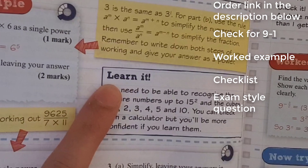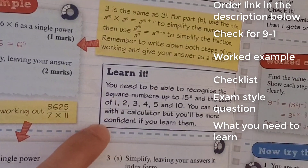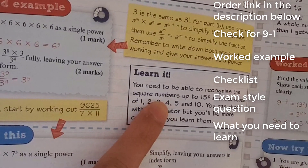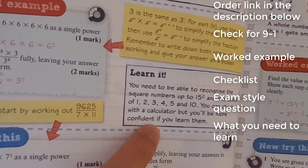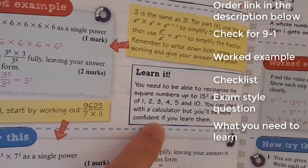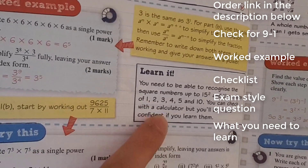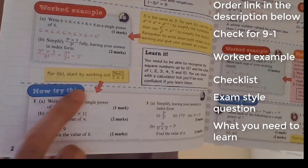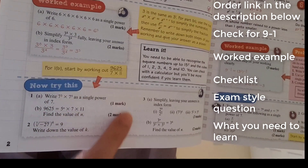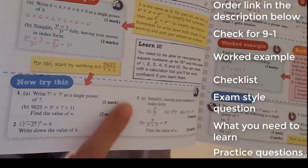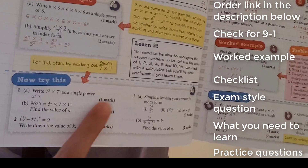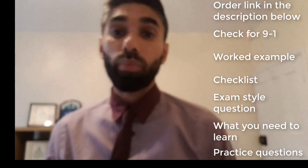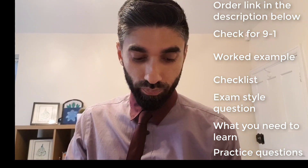There are hints and tips highlighted in yellow, and it tells you what you need to learn to master this topic. For example, it says to learn the cube numbers for 1, 2, 5, and 10 — although you can use a calculator, if you don't have one in a non-calculator exam you'll need to know these. Finally, it gives you questions to try with marks next to them for exam practice. Once you've had a go and checked your answers, you can see whether you've mastered the topic.